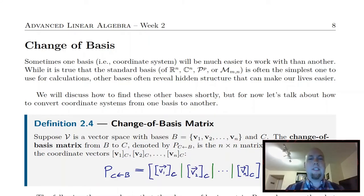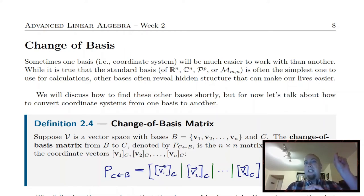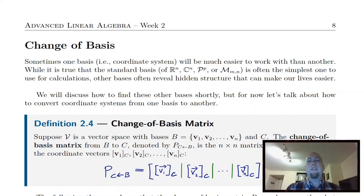Hey folks, my name is Nathan Johnson and welcome to lecture 8 of Advanced Linear Algebra, which is all about change of bases. The idea for this lecture is — recall from a couple lectures ago that we learned you can represent vectors from vector spaces as coordinate vectors, which are lists of numbers representing how far that vector points in each direction specified by whatever basis you're working with.